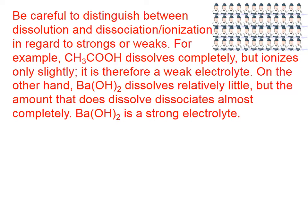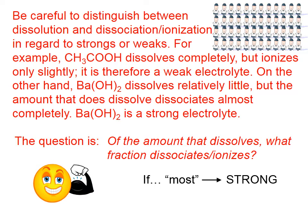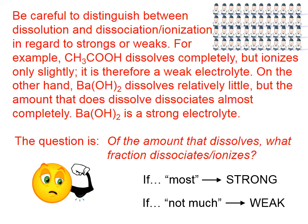Be careful to distinguish between dissolution and dissociation or ionization in regard to strong or weak electrolytes. For example, CH₃COOH dissolves completely but ionizes only slightly — it is therefore a weak electrolyte. On the other hand, barium hydroxide dissolves relatively little, but the amount that does dissolve dissociates almost completely, making it a strong electrolyte. The key question is: of the amount that dissolves, what fraction dissociates? If the answer is most, it's strong; if not much, it's weak.